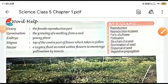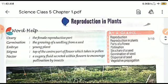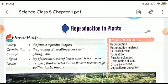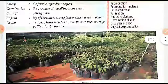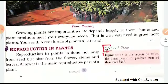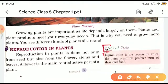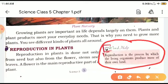Good morning children. Hope you all have understood your first chapter which is Reproduction in Plants. In the previous two videos you have seen what reproduction is and what reproduction in plants is. Reproduction is the process by which the living organism produce more of their own kind. You should remember this basic definition — they should produce more and the product should be of their own kind.